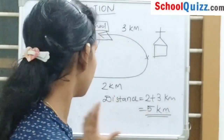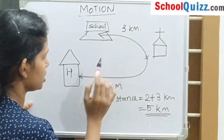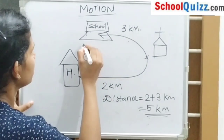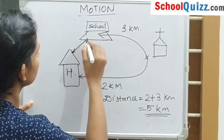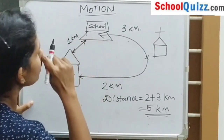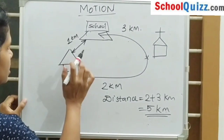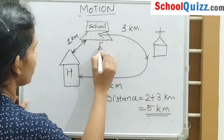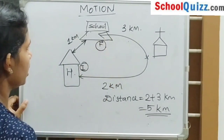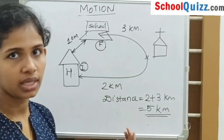What is the final position here? School is the final position and house is the initial position. The shortest distance between them is 1 km. So displacement is the shortest distance between the final and initial position, which is 1 km, not 5 km.